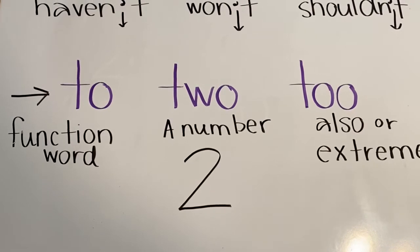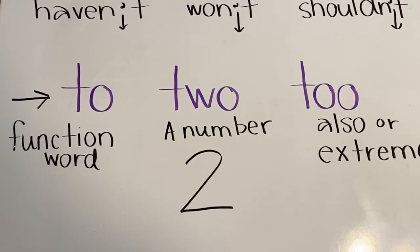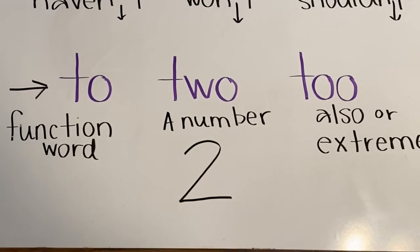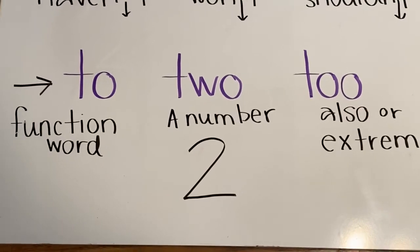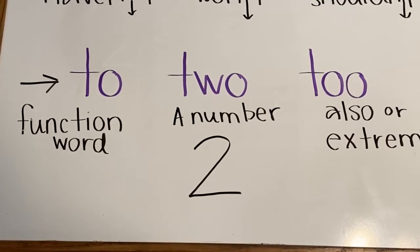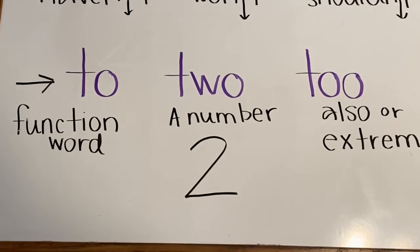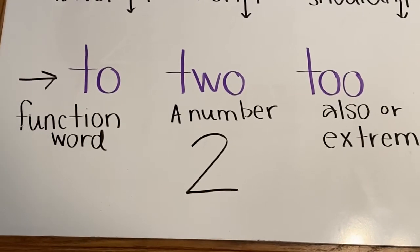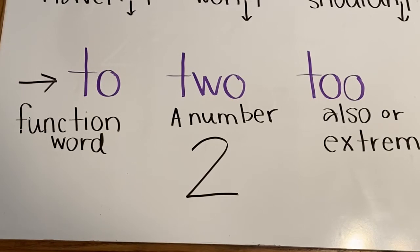I also want to talk about three words. To, two, and too. What do you notice about these three words? All of these words sound the same, to, two, and too, but they are spelled differently. These are called homophones.